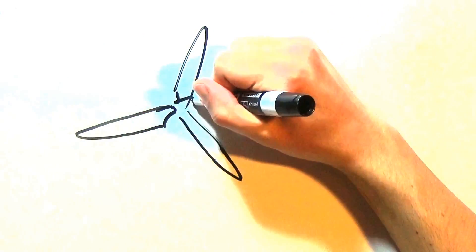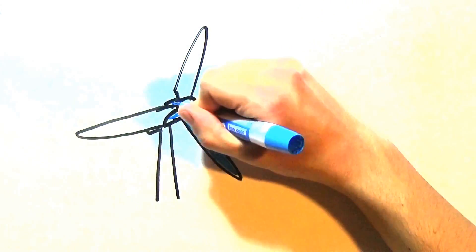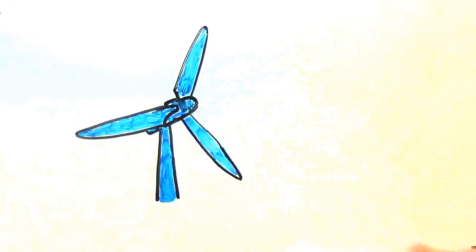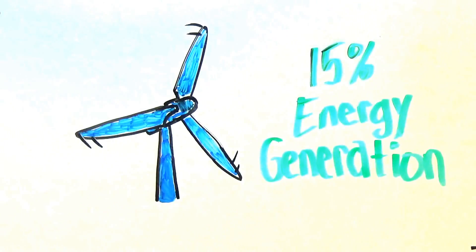Engineers have even found ways to harness wind current power through building design, such as with the wind turbines stationed in between the two segments of the Bahrain World Trade Center in Dubai. These wind turbines are designed to receive extra wind flow from the Trade Center and generate enough electricity for 15% of the building's power usage.